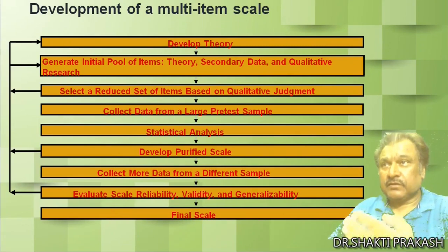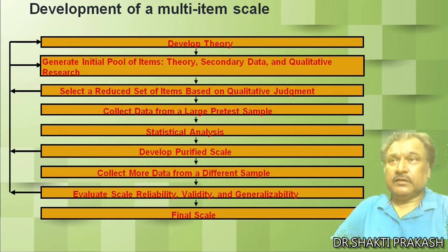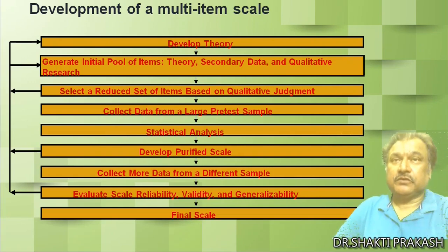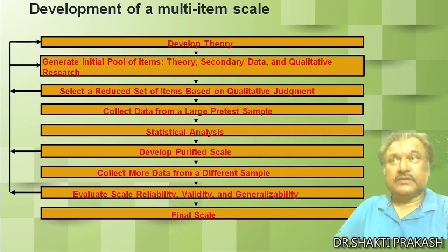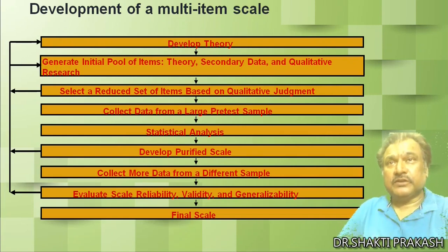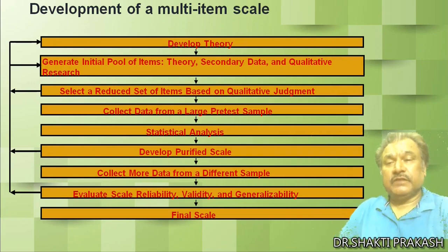Now, what are the major steps for developing a final scale? First, we will develop the theory. Like previous research has developed some theories — Maslow developed the motivational need hierarchy theory, and the carrot and stick theory has been developed. There are also natural theories: if you do exercise, you will be healthy; if you use some spices, your immunity power will increase. On the basis of that theory, we will make our researches. The second step will generate an initial pool of items from theory, secondary data, and qualitative research.